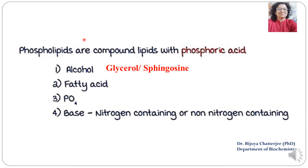The phospholipids are compound lipids with phosphoric acid present in them. Fats have been divided into four classes: simple lipids, compound lipids, derived lipids, and lipids attached to other molecules such as carbohydrates and proteins. Today we are going to discuss only about phospholipids, which fall in the second class of lipids — compound lipids — and these lipids essentially have a phosphoric acid group.